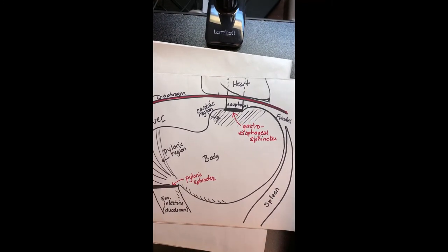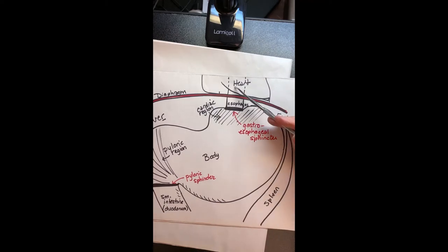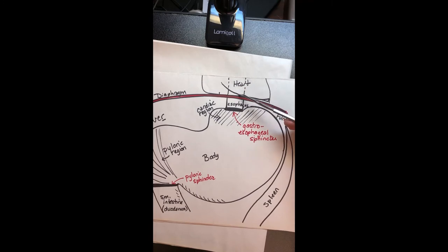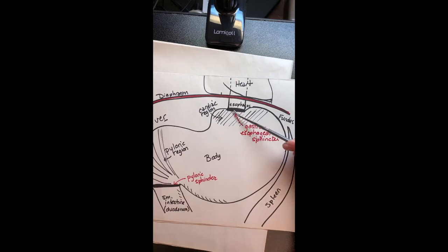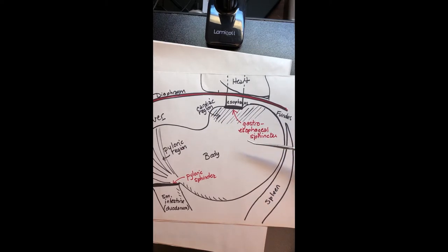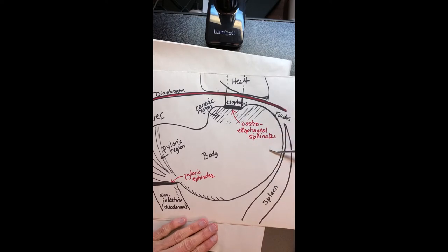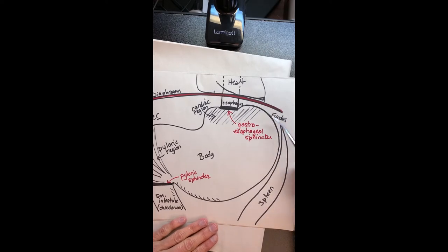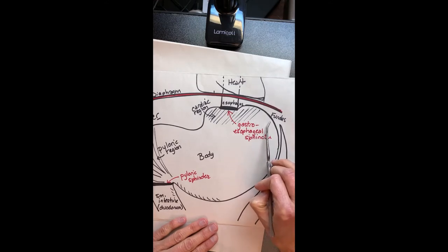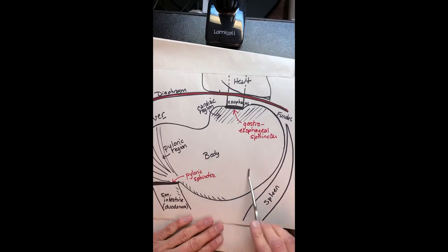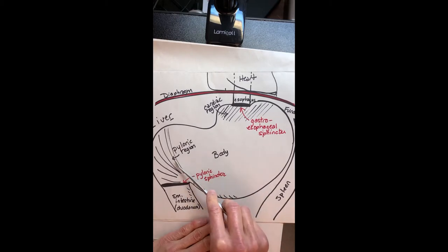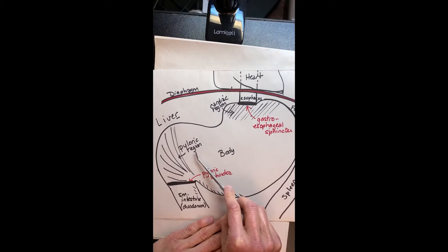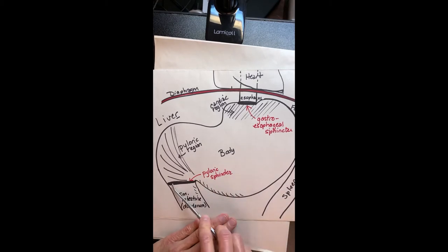Here again is the stomach. We have the heart sitting over the stomach, so the esophagus goes behind the heart, running down through the diaphragm. The stomach emerges and turns into the cardiac region. We have a gate — a sphincter — that is the gastroesophageal sphincter. As we leave the body of the stomach to go into the duodenum, we move through the pyloric region.